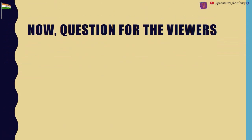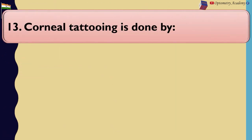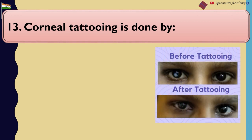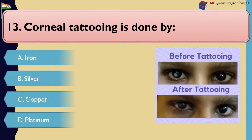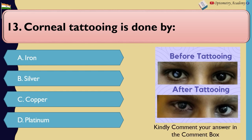Now a question for the viewer: Corneal tattooing is done by A. Iron. B. Silver. C. Copper. D. Platinum. Kindly comment your answer in the comment box. Kindly subscribe the channel and press the bell icon. Thank you for watching.